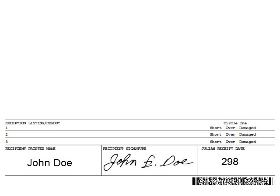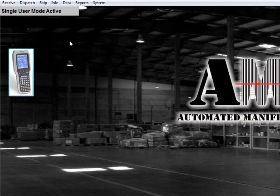If there was an overage, shortage, or a shipment was damaged, you can include that information on the Exception Listing Report section. Once the shipments have been delivered and signed for, the tally sheet must be closed out. Closing out a tally sheet will indicate when a delivery was made and who signed for it. If you do not have the capability to close out a tally sheet via the BCR, you may have to perform a manual input.